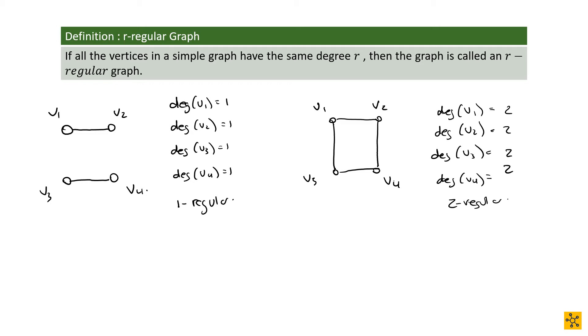You can also find a three regular graph for this one. When we get to the complete graph, I want you to link up what we did here with the complete graph. Here we have the degree of V1 is equal to three, the degree of V2 is equal to three, the degree of V4 is equal to three, and the degree of V3 is equal to three. It's a three regular graph.